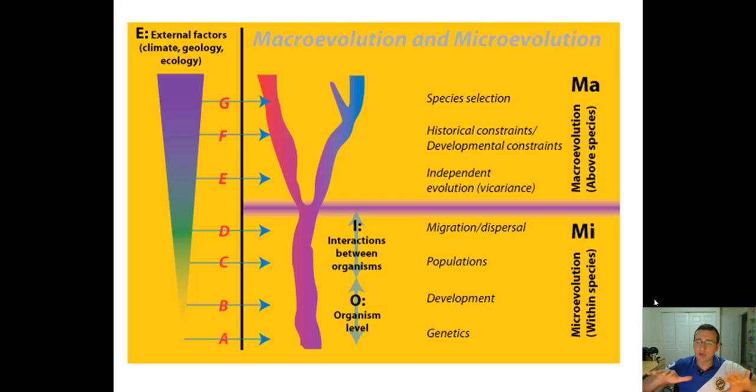That will actually lead to independent evolution. Later, maybe the populations will interact again, and then you're going to get those things like reinforcement, fusion, or stability that we talked about.